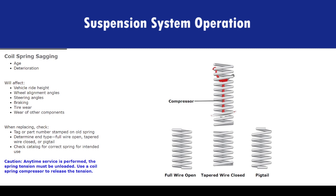Coil springs eventually sag because of age and deterioration. A sagging spring will affect vehicle ride height, wheel alignment angles, steering angles, braking, tire wear, and wear of other suspension components. Spring maintenance is normally a replacement effort. Check for a tag or part number stamped on the old spring, and examine the spring to determine the type of end it has: full wire open, tapered wire closed, or pigtail. Check your catalog closely to ensure the replacement is the correct spring for the intended use.